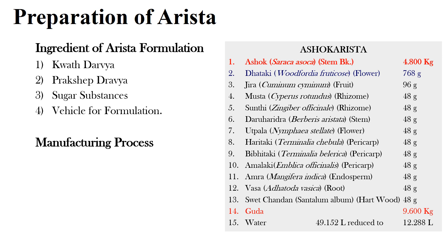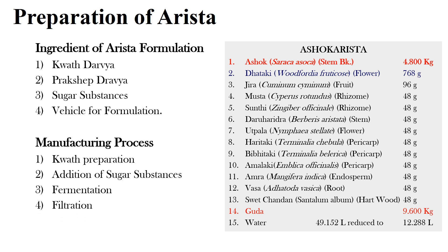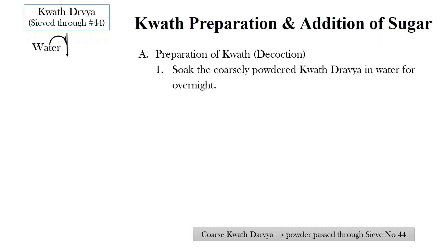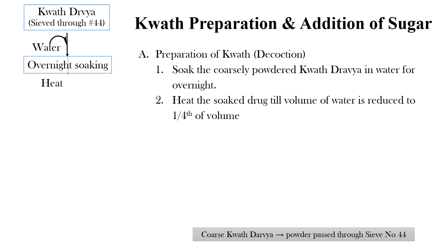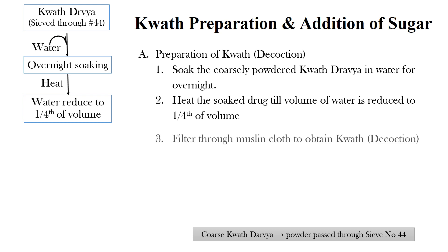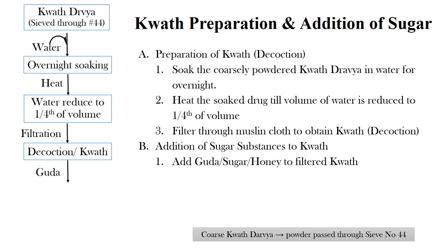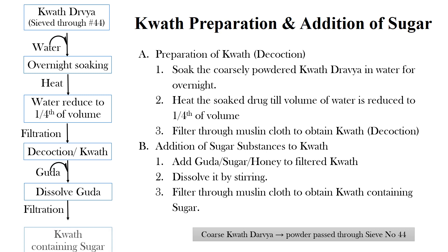The manufacturing process of an Arisht includes four major steps: preparation of Kwath, addition of sugar substances to the Kwath, fermentation process, and then final filtration. For the preparation of Kwath, soak the coarsely powdered Kwath Dravya in water overnight. Heat the soaked Dravya until the volume of water is reduced to one-fourth. Filter it through muslin cloth to obtain Kwath. Then add jaggery, sugar, or honey to the filtered Kwath, dissolve it while stirring, and filter through muslin cloth to obtain Kwath containing sugar substances.